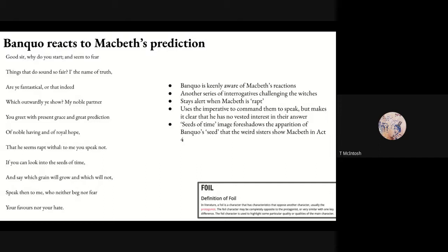Another series of interrogatives as Banquo challenges the witches: 'In the name of truth, are you fantastical? Or that indeed which outwardly you show?' He uses an imperative to command them to speak — 'If you can look into the seeds of time and see which grain will grow and which will not, speak then to me' — making clear he has no vested interest in their answer. That 'seeds of time' image is instantly evocative: Banquo's seed will end up being James I, and in Act 4, apparition after apparition shows king after king — those are the seeds of time.